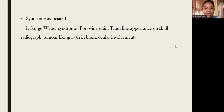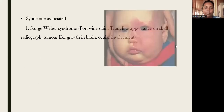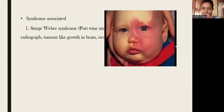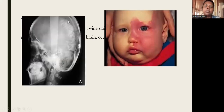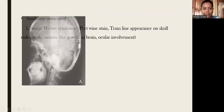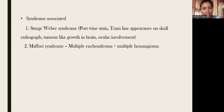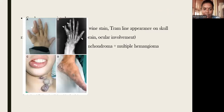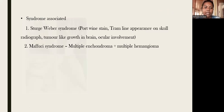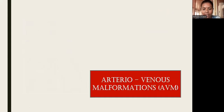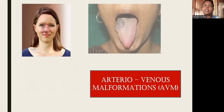Syndromes associated with hemangioma include Sturge-Weber syndrome, where there will be a port-wine stain, tramline calcifications on skull radiograph (giving a tram-track appearance), tumor-like growth in the brain, and ocular involvement. Second is Maffucci syndrome, which is multiple enchondromatosis and multiple benign tumors of cartilage with multiple hemangiomas. Third is Kasabach-Merritt syndrome, which is hemangioma plus thrombocytopenia.